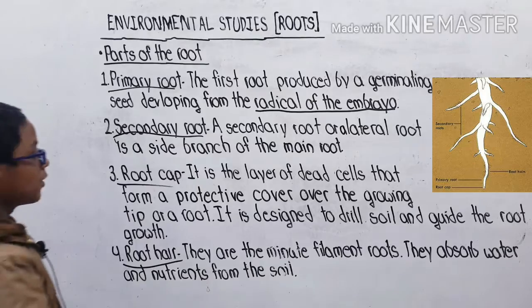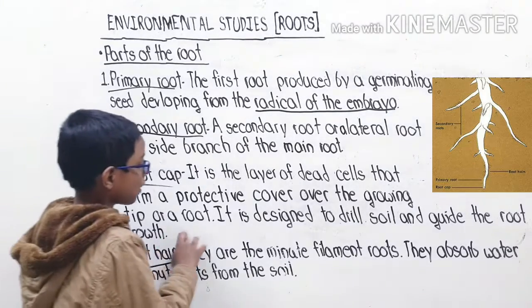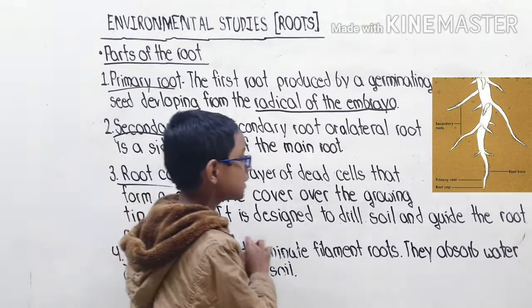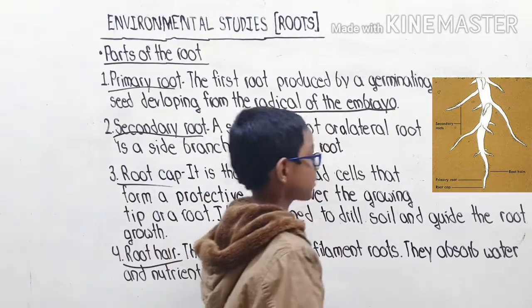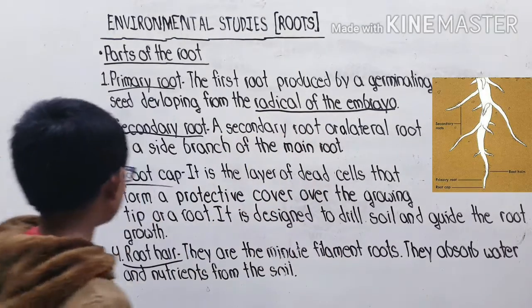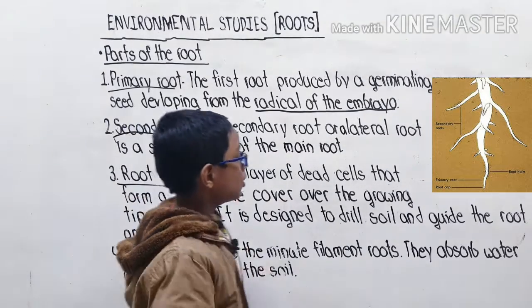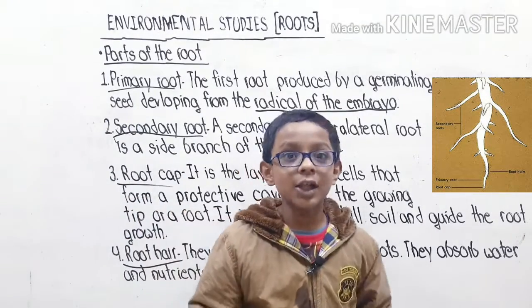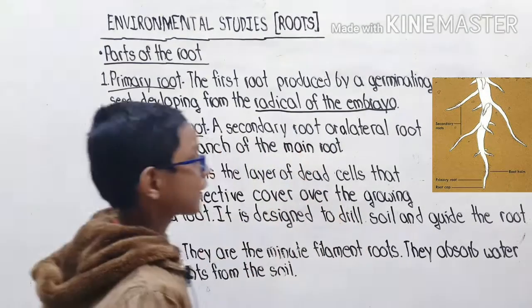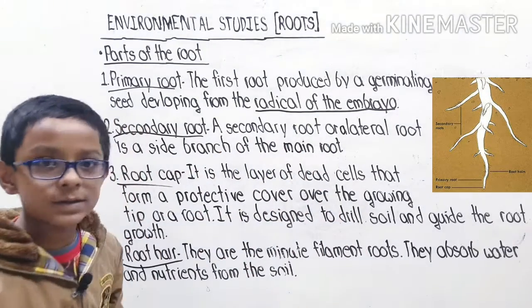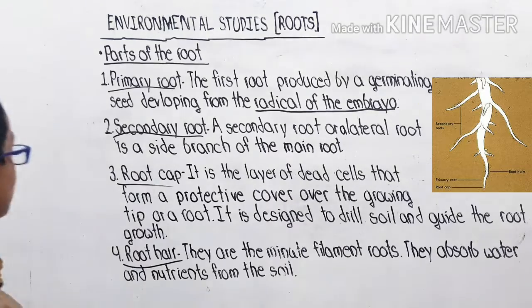Root cap: it is the layer of dead cells that form a protective cover over the growing tip of the root. It is designed to drill soil and guide the root growth. Root cap design kiya gaya hai taaki wo soil ko drill kar sake aur root growth ko guide kar sake.